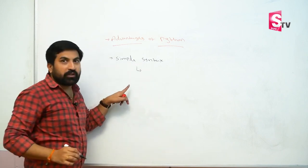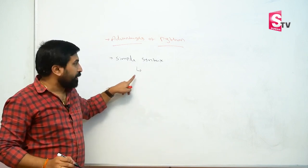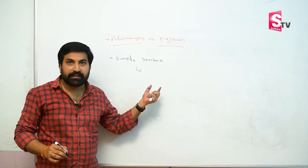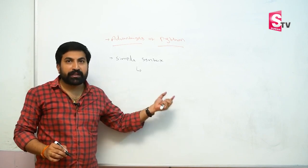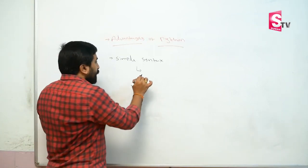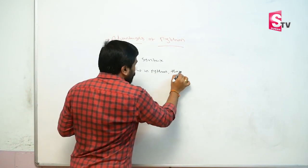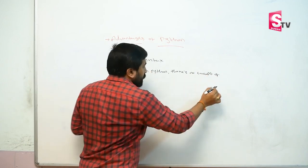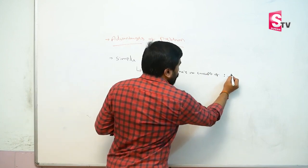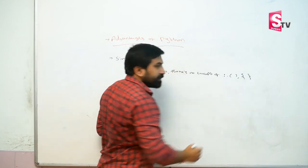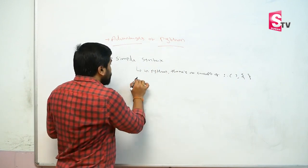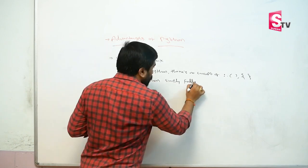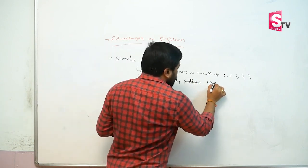In C, C++, and Java, there is a semicolon in each statement, and there are conditions for parentheses and curly braces. In Python, there is no concept of semicolons, parentheses, or curly braces. Python simply follows the space indentation concept.